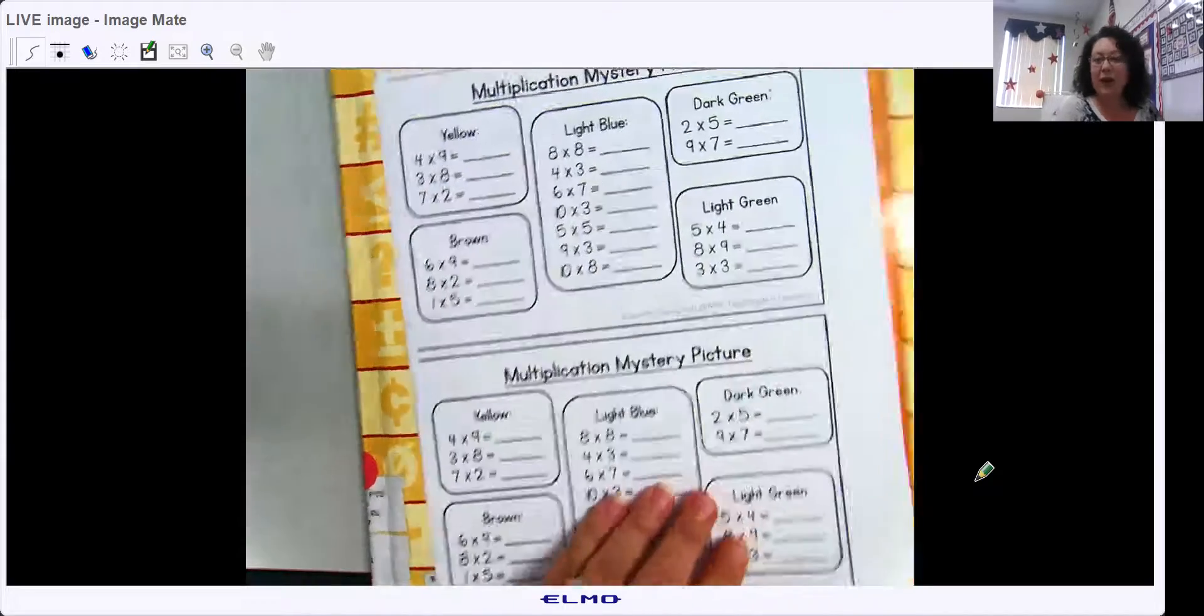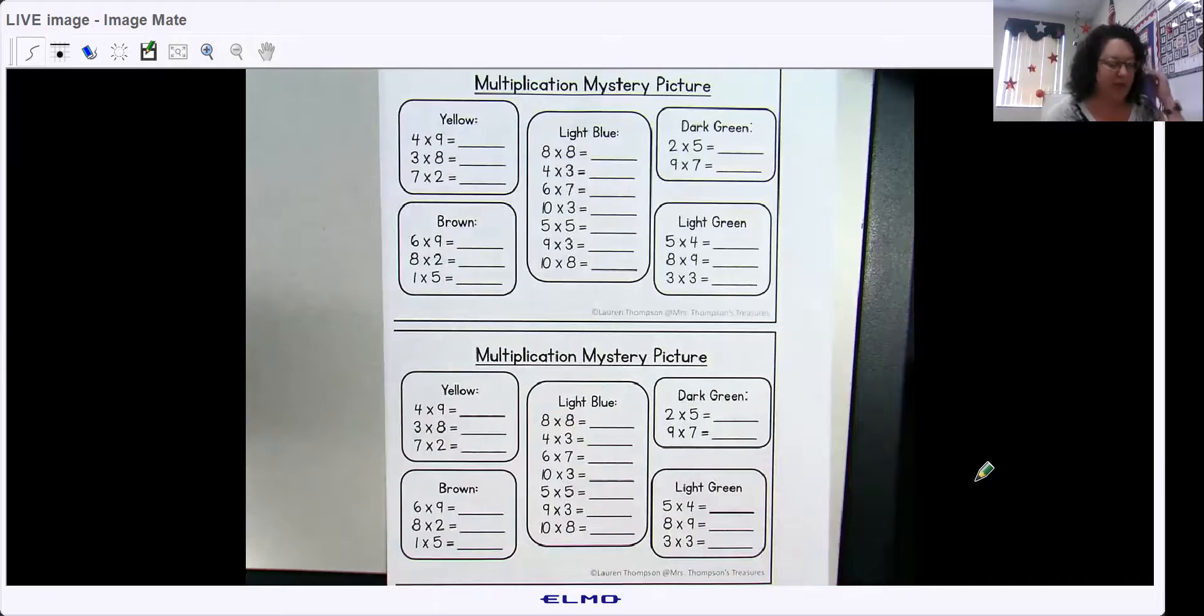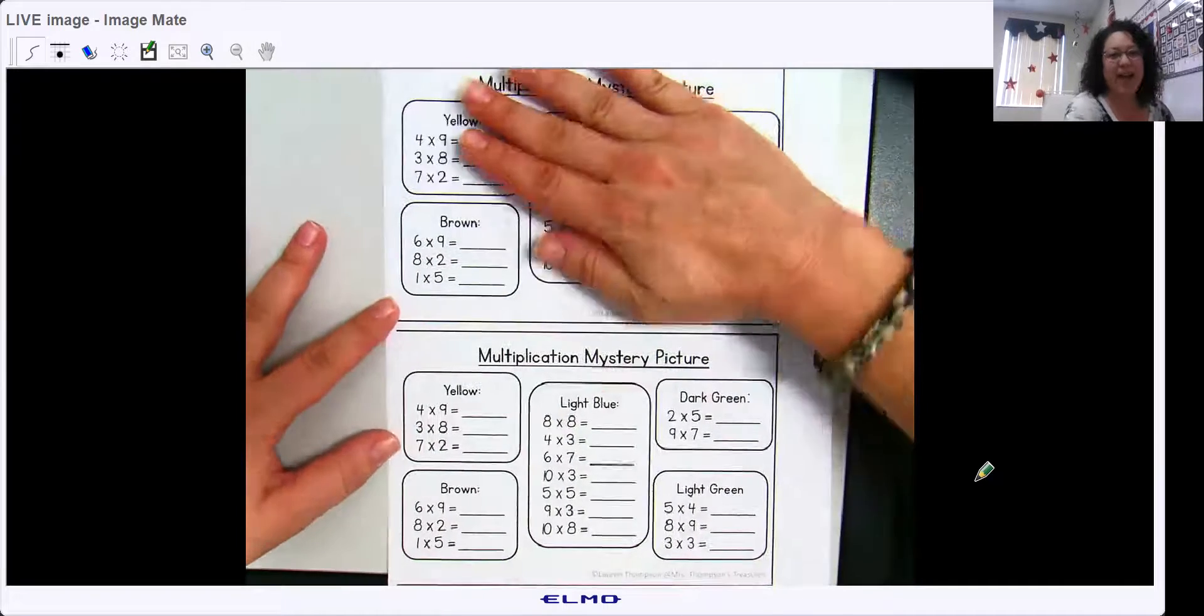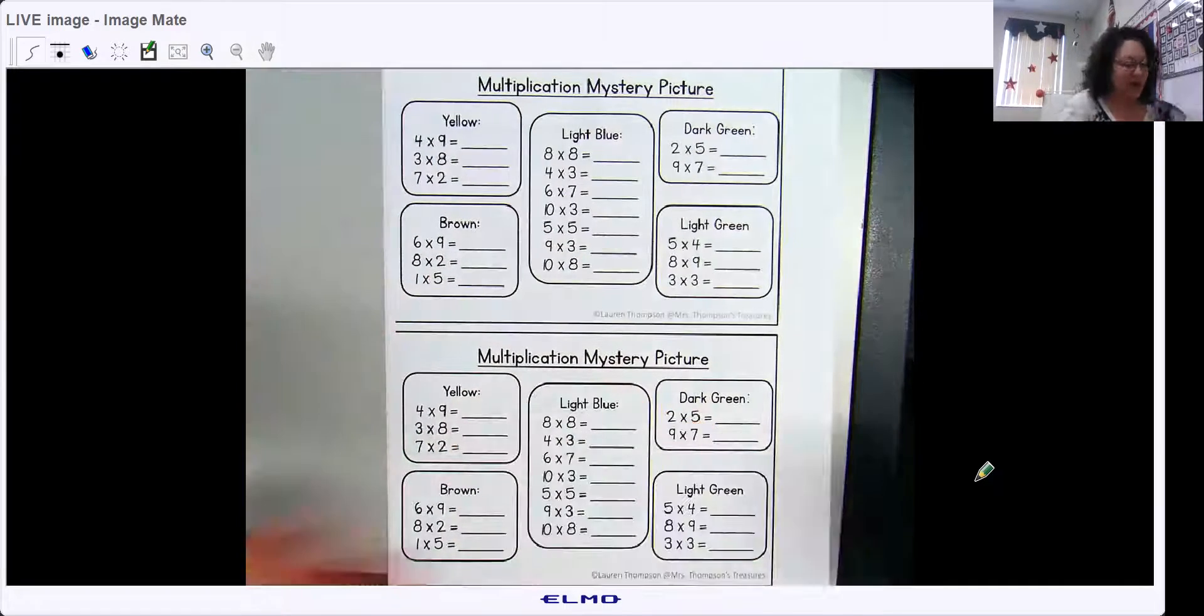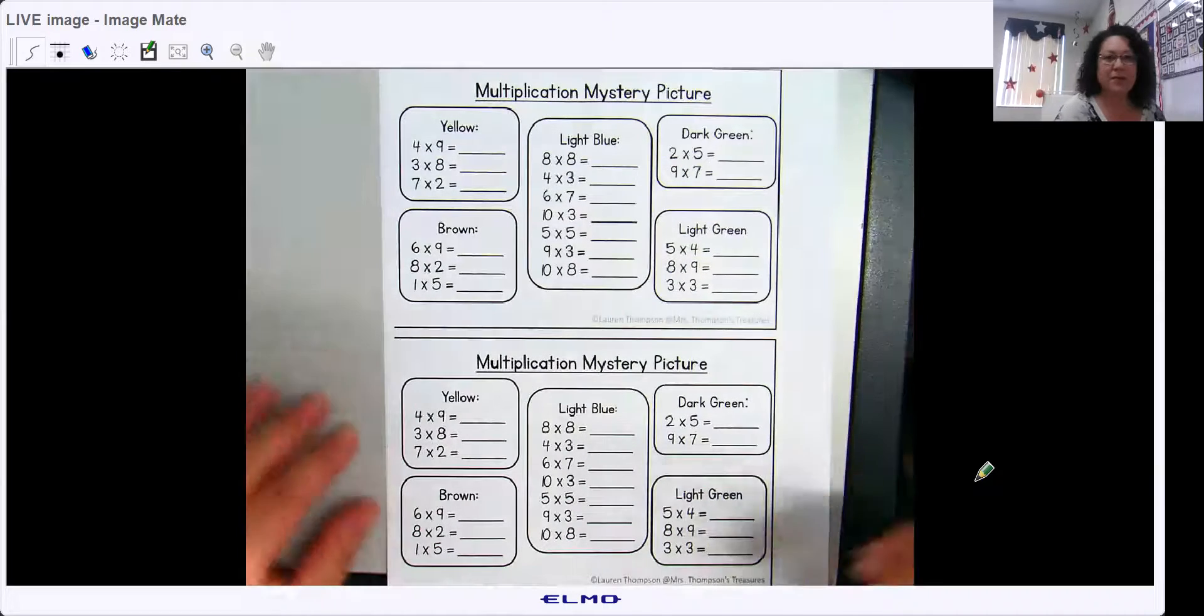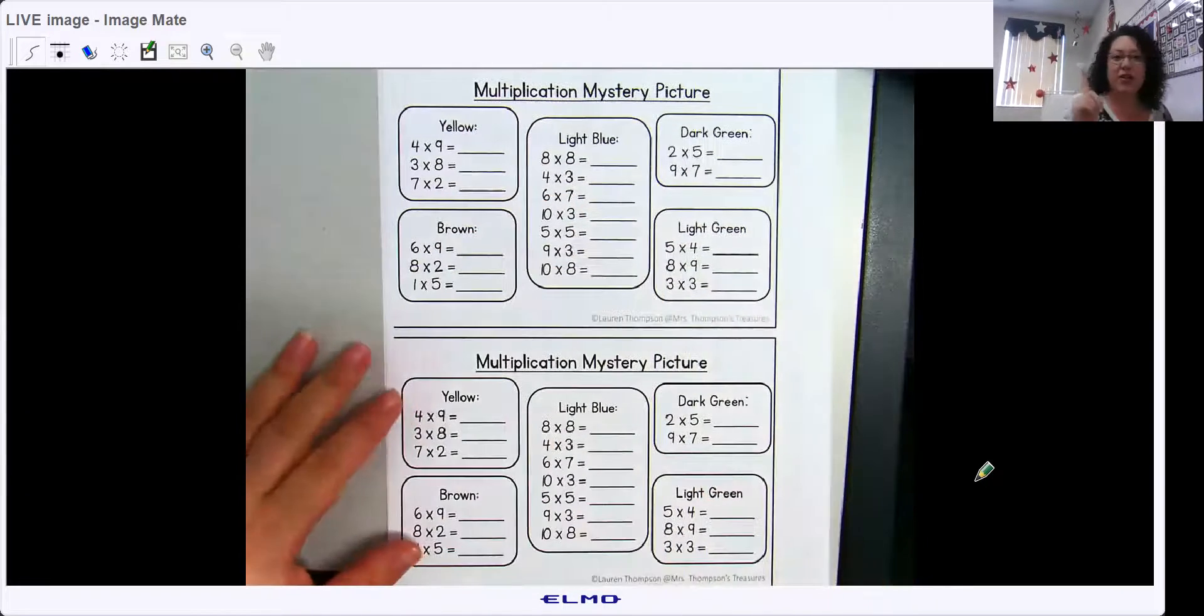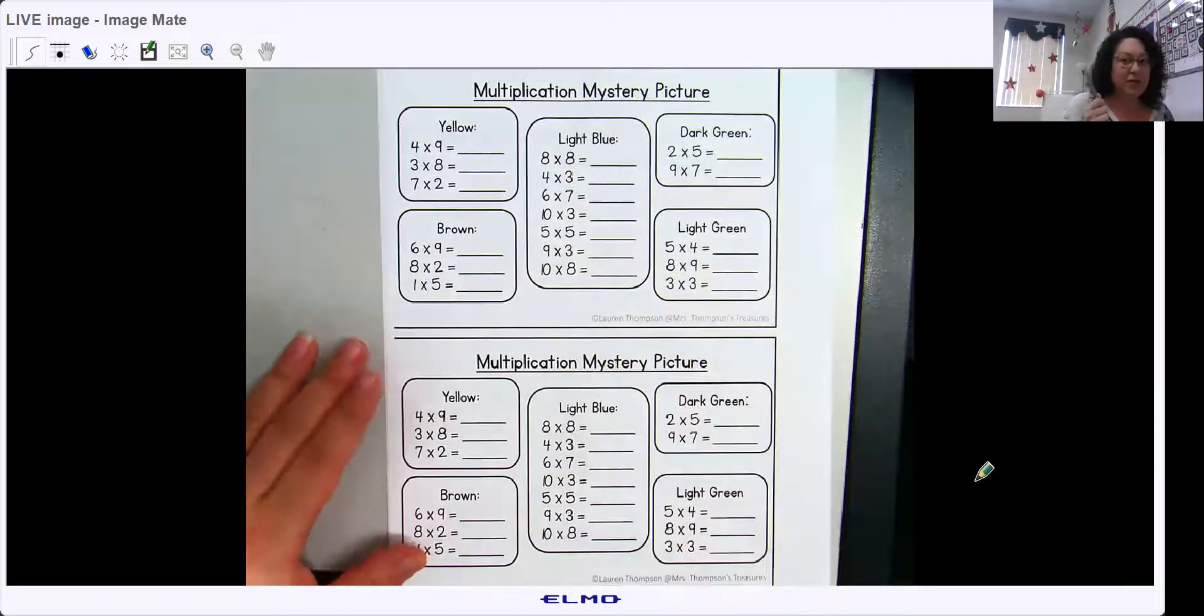Okay, so I'll run through these directions quickly because I'm pretty sure you know how to do that. Now if you'll notice the top half and the bottom half are the same. So you only have to do one. It just printed twice on one page. So you would solve the problems. I'm just going to do one because you need to do your own multiplication.